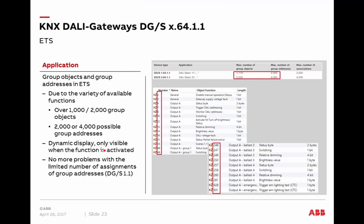The amount of group addresses and communication objects in these new components is remarkable. The one-fold device has over 1,000 possible group objects, resulting in 2,000 possible group addresses that can be assigned. The two-fold device has roughly double. Thanks to the new processor inside, there is practically no limit anymore. This was a challenge with the DGS 1-1, which had a limit of 255 group addresses — creating many KNX groups could easily reach that limit. That limitation is now completely eliminated with the new gateways.